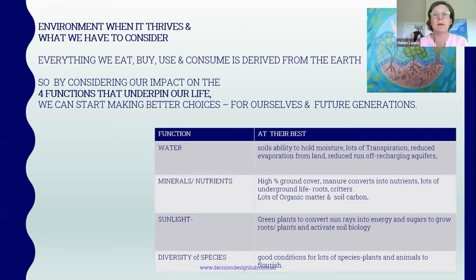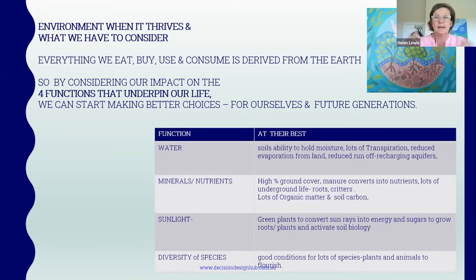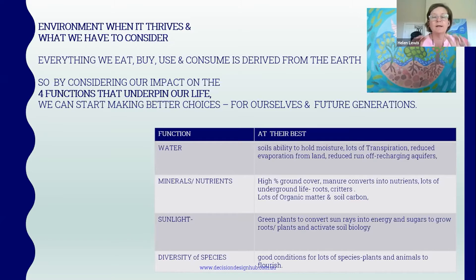At their best: the water cycle means soil holds moisture, reducing evaporation and runoff; the mineral cycle feeds all the soil critters and the roots of plants; sunlight capture means big broad-leaf plants capturing energy and storing it in the ground with good ground cover; and diversity covers the range of age, structure, plants, and animals both below and above the soil. If we achieve highly functioning ecosystem processes — these four functions for life — we will start to win the game.